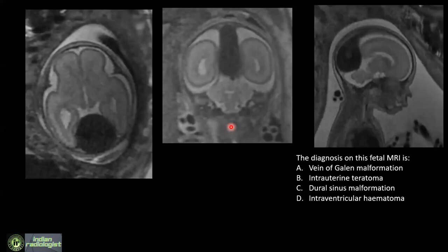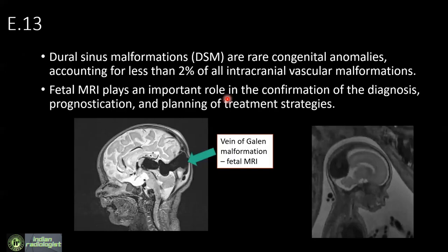This is a fetal MRI case. Most replied vein of Galen malformation, then dural sinus malformation. There is a large abnormal flow void representing a vascular channel, but the location is not that of a vein of Galen malformation. This is a dural sinus malformation which has been partially thrombosed. These are known to resolve — if followed on fetal MRI or ultrasound, they will slowly reduce in size. On ultrasound they may be mistaken for posterior fossa masses.